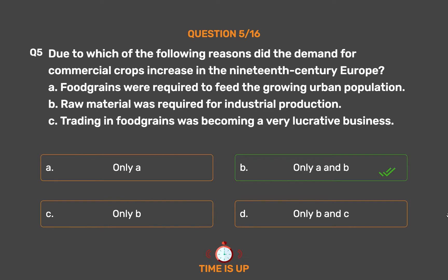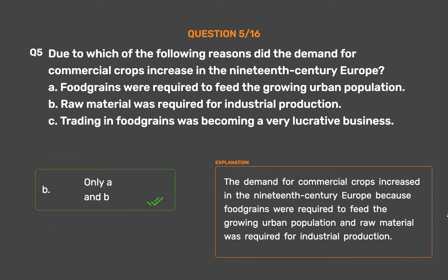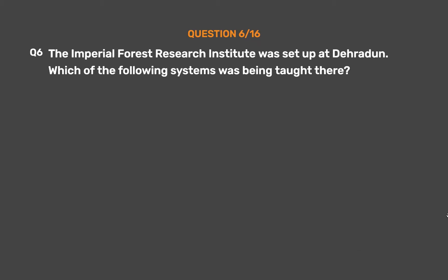The demand for commercial crops increased in 19th century Europe because food grains were required to feed the growing urban population and raw material was required for industrial production. Question 6: The Imperial Forests Research Institute was set up at Dehradun.